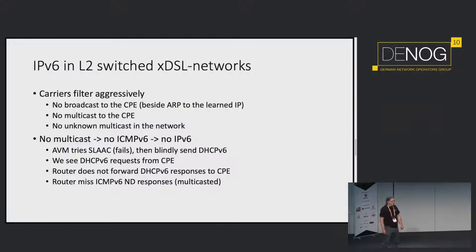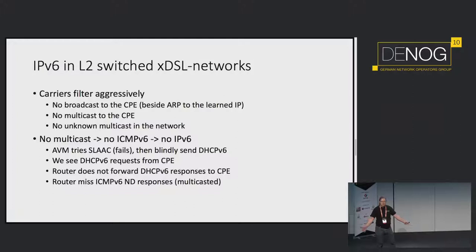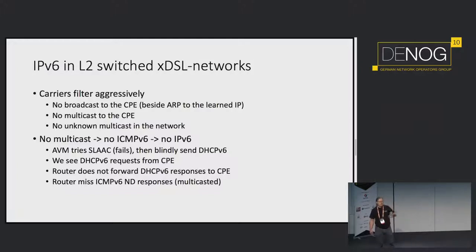Thanks to AVM: if Fritzboxes don't see a router advertisement — which is multicasted and doesn't reach them, like here in the room for the VLAN — they do a very simple thing: they still send DHCP requests saying 'give me IPv6 addresses.' That's fine because the request reaches us. But we can't respond to it properly because the router relaying the request can't send the response back — it has no neighbor discovery and doesn't know which MAC address to use.